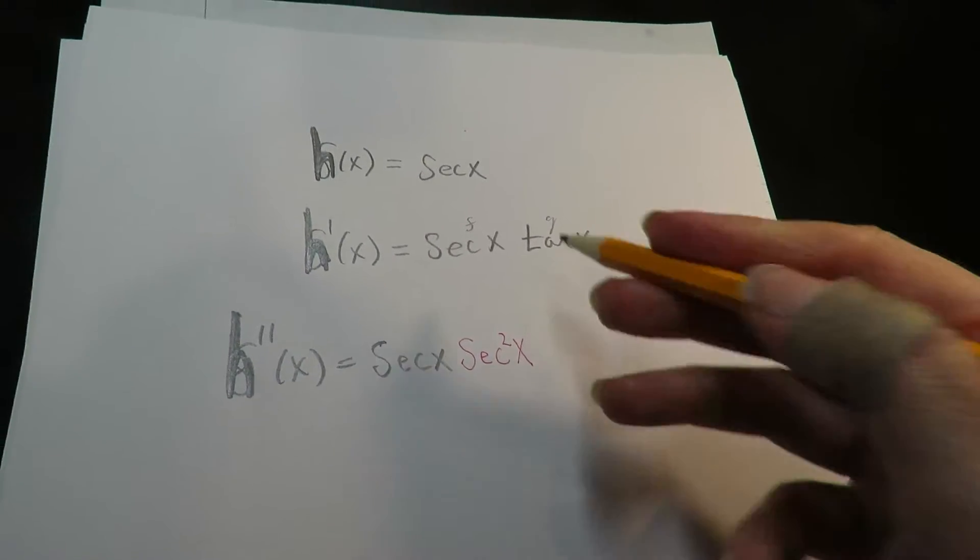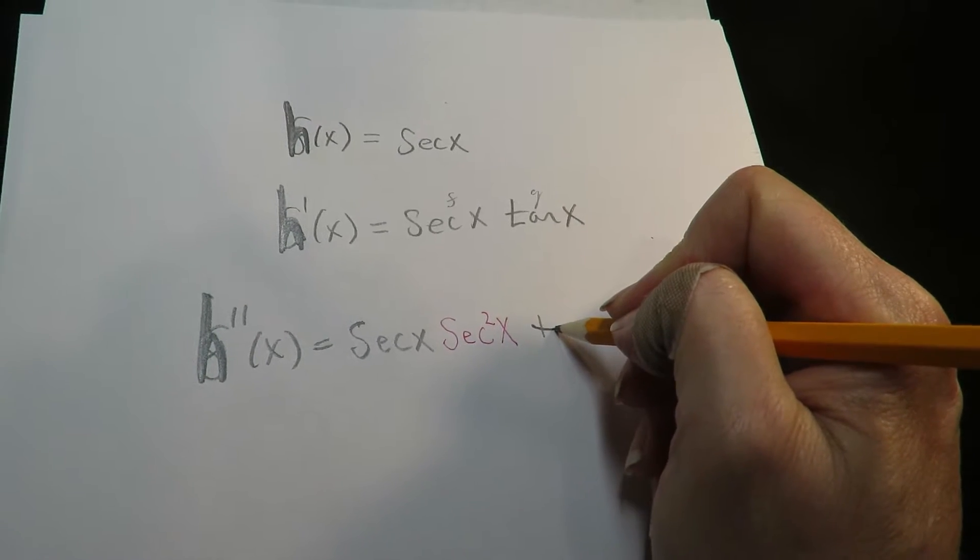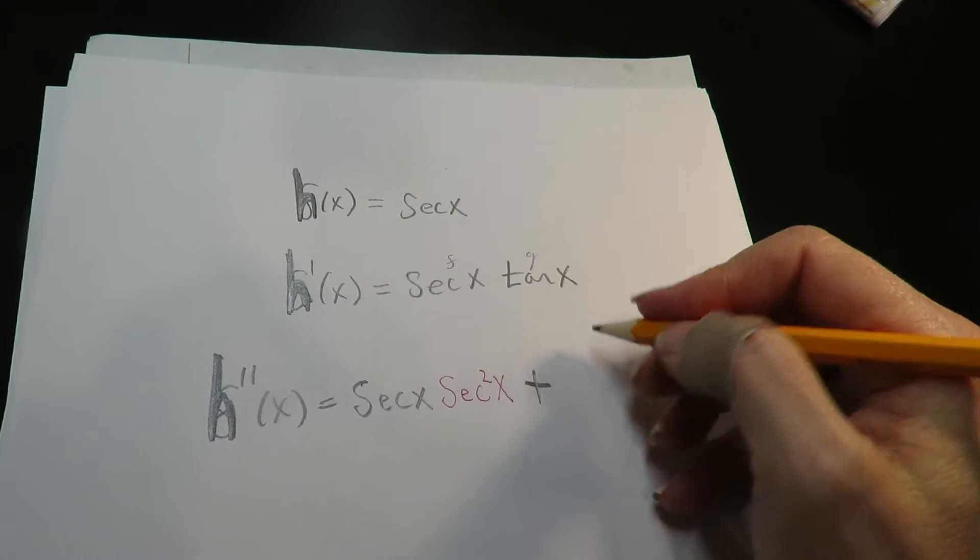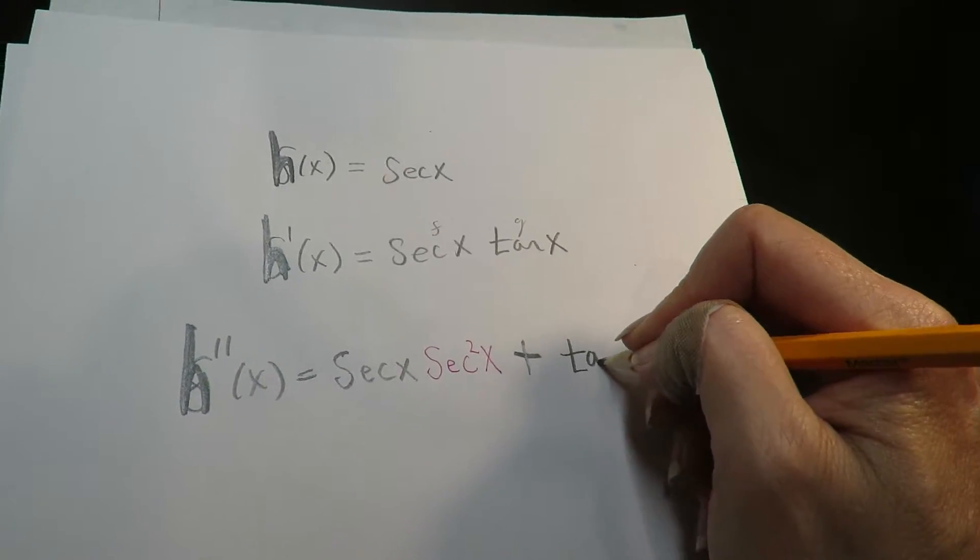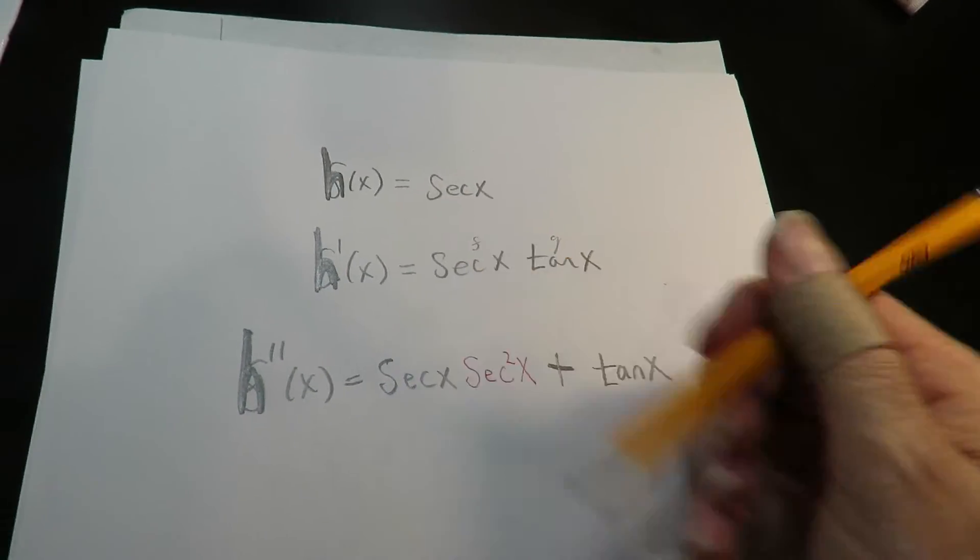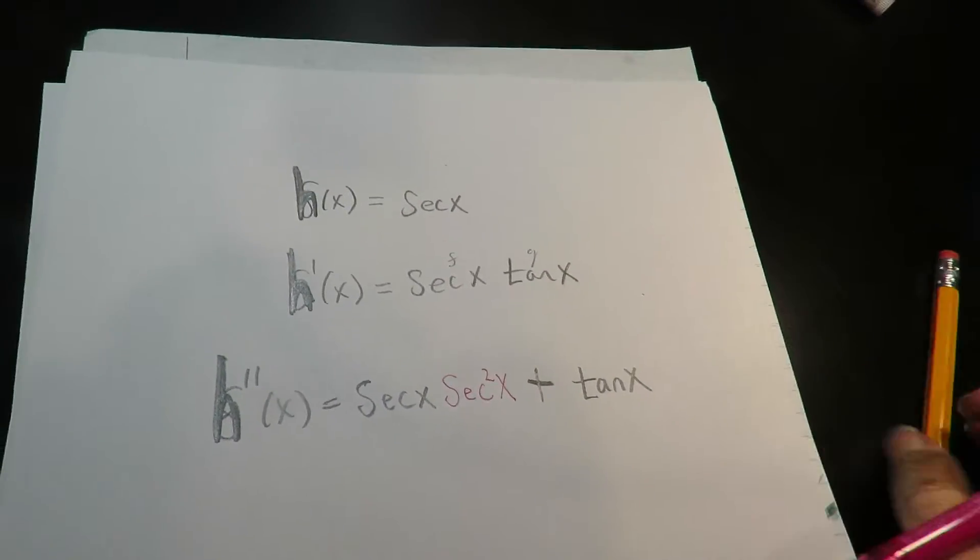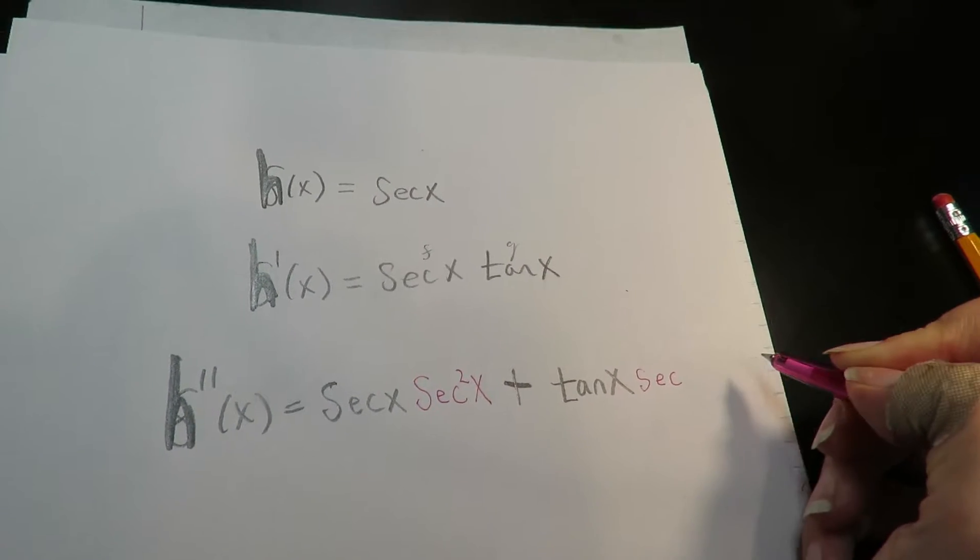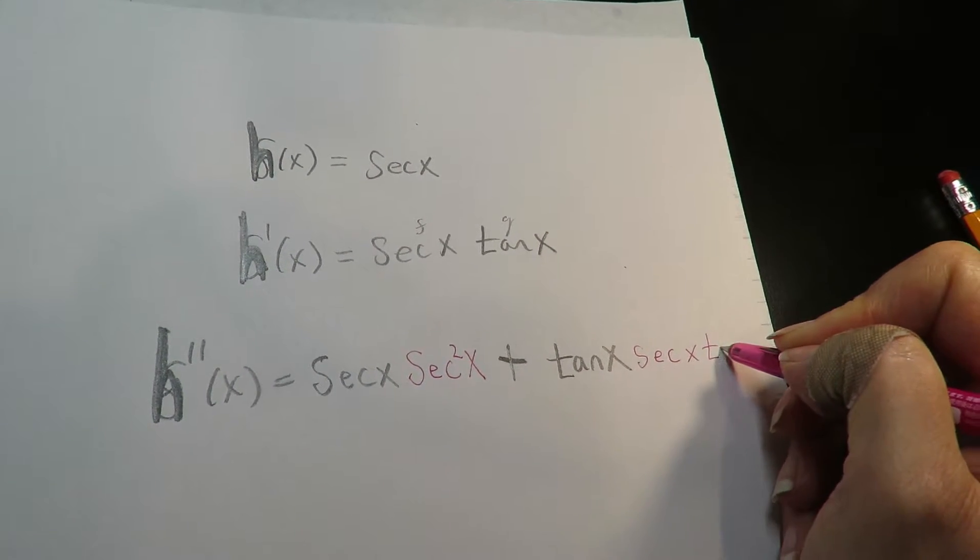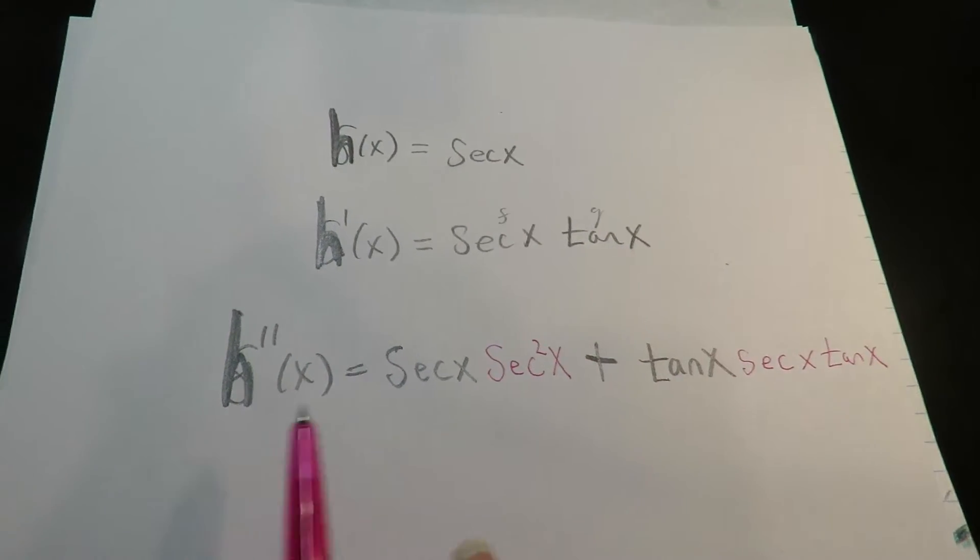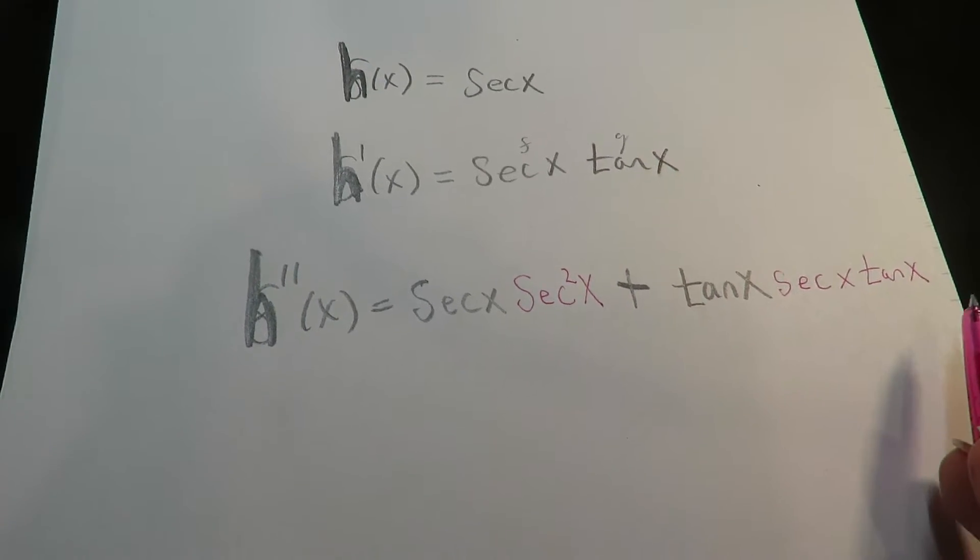Now we do the opposite. We're going to add, product rules add, quotient rules subtract. Now we take the second guy, leave the second guy alone, leave g alone, and we're going to take the derivative of f. The derivative of secant is secant x tangent x. I'm doing the product rule here, that's why this has gotten huge.